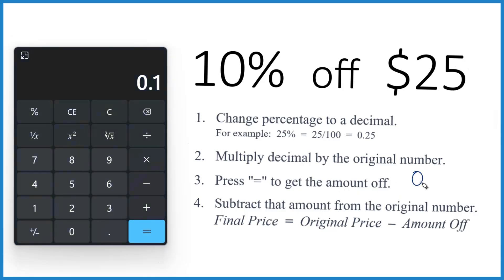We take that 0.1 and we multiply it by the original number. That's $25 there. So 0.1 times $25, $2.5.